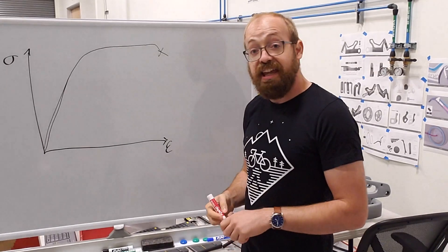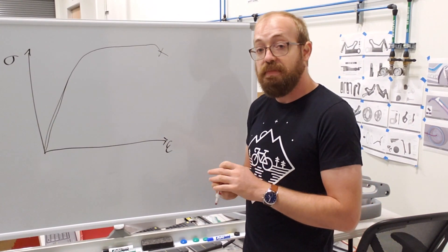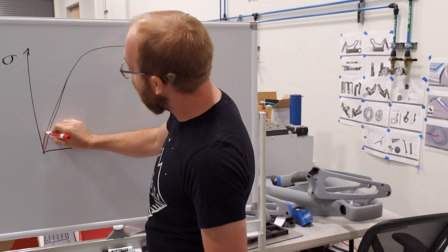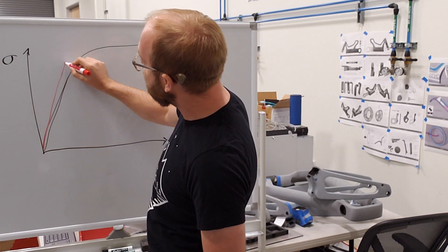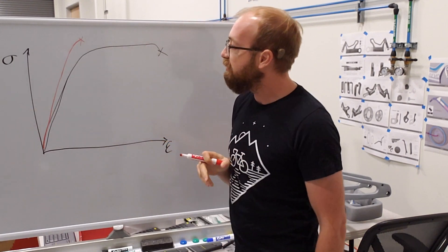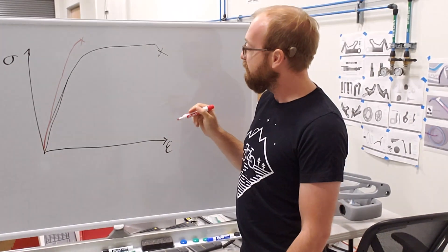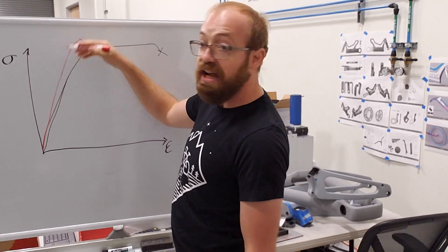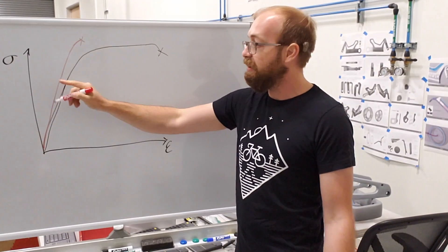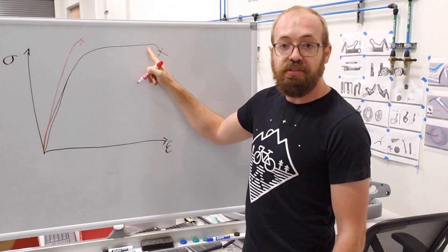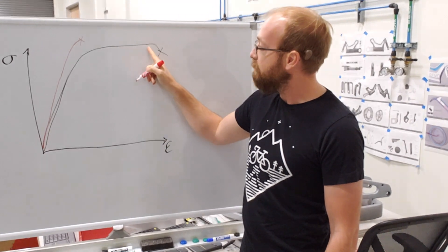Contrast that with, let's say, a more brittle thermoset bike, a more traditionally manufactured bike. That might have slightly more stiffness in the beginning, but then very quickly it's going to peak out and fail prematurely. And something to note here is that the amount of stress, how high this curve is, that's about the same between the brittle thermoset bike and the more ductile, tougher thermoplastic bike.